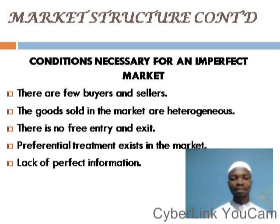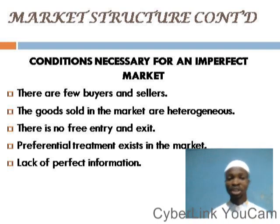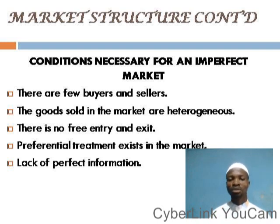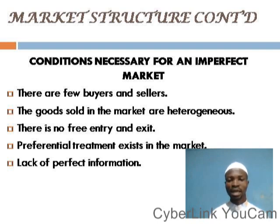Another condition is that in an imperfect market there is preferential treatment, which is not the case under a perfect market where everybody is treated equally. There is also a lack of perfect information in an imperfect market. To summarize the conditions: there are few buyers and sellers; goods sold are heterogeneous; there is no free entry and exit; preferential treatment exists; there is lack of perfect information; and the operators are price setters because they have control over the price of goods and services.